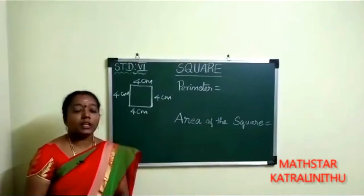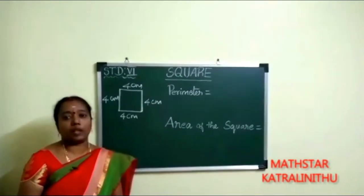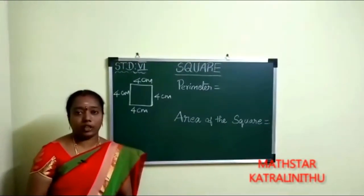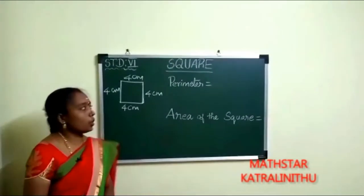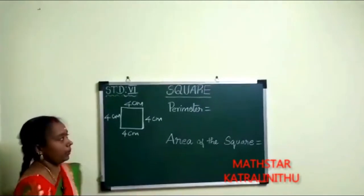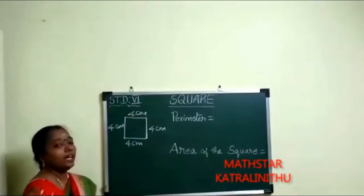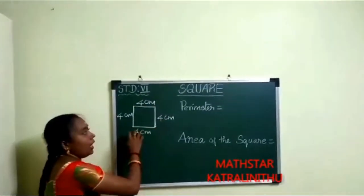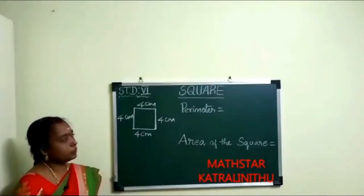In standard 6, they introduce perimeter and area. So perimeter is equal to the sum of all the sides of the shape. For the given shape, we add all the boundary lengths.